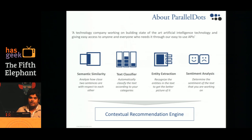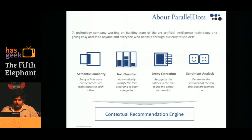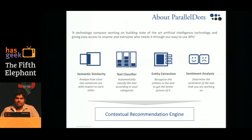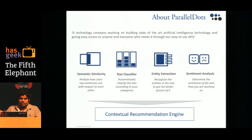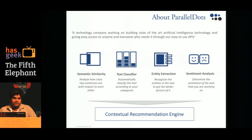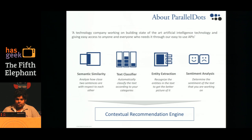These involve semantic similarity between two text contents, a text classifier which is more or less unsupervised — you just give it a sentence and a tag and it can detect whether the content belongs or not, without needing a tagged dataset. There is also entity extraction to detect named entities within a sentence, and a sentiment analysis API to analyze the sentiment of a text.